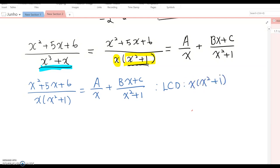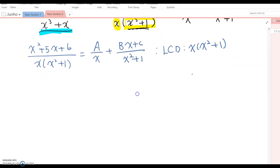Now, as we do all the time for this type of question, we multiply LCD for both equations. Then it's going to be x squared plus 5x plus 6 equal to A times x squared plus 1 plus bx plus c times x.